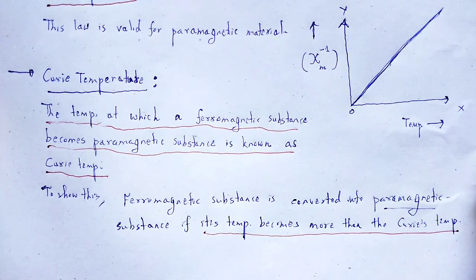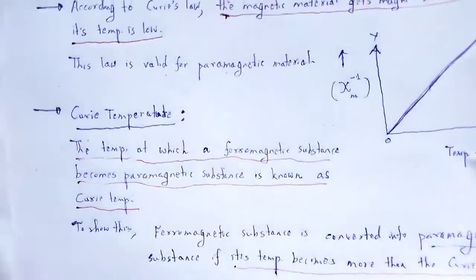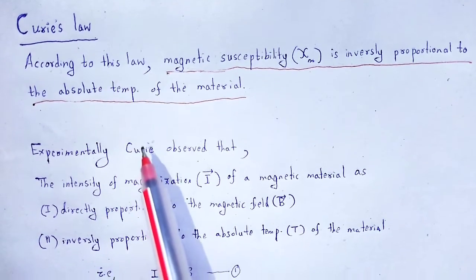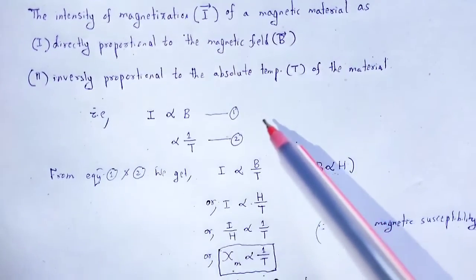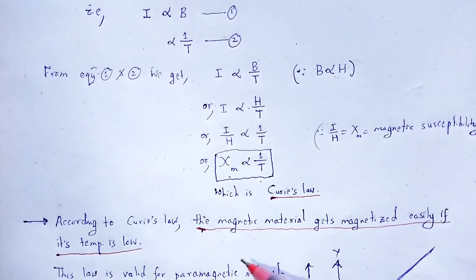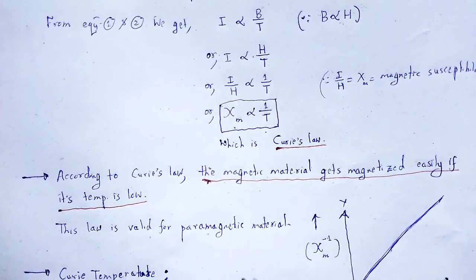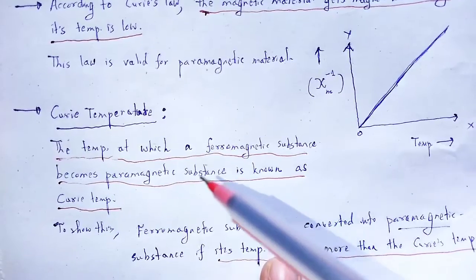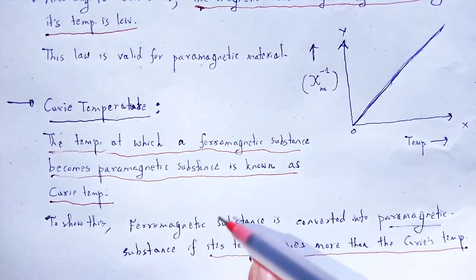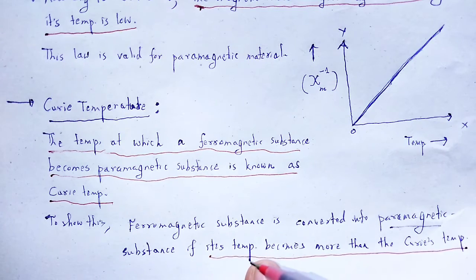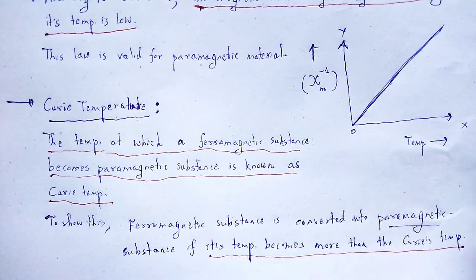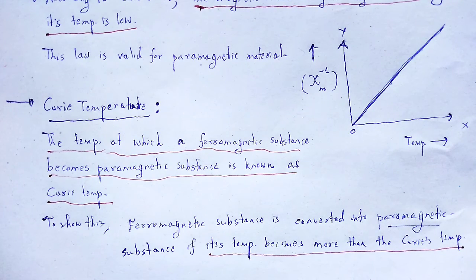With the help of this video lecture, we understand a basic idea on Curie's law — what Curie's law is, its mathematical form, its importance in the magnetism of a substance, and an idea of Curie temperature — how a ferromagnetic substance is converted into a paramagnetic one using the Curie temperature concept. With these useful and informative notes, let me wind off this session. Thank you.